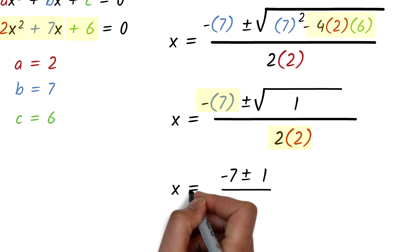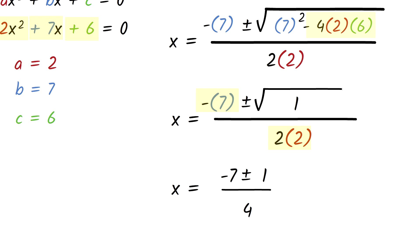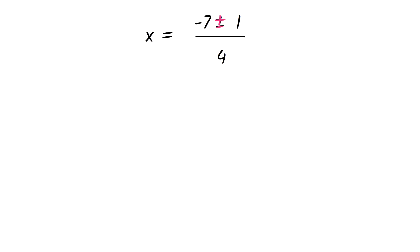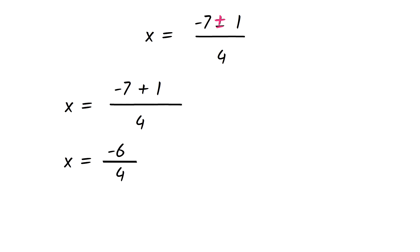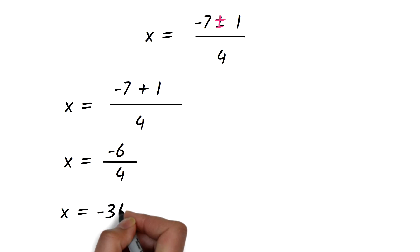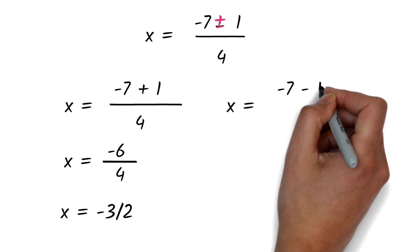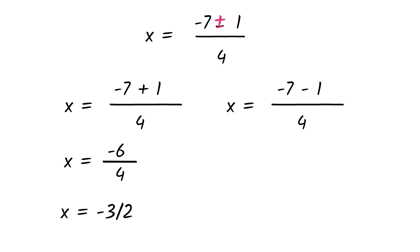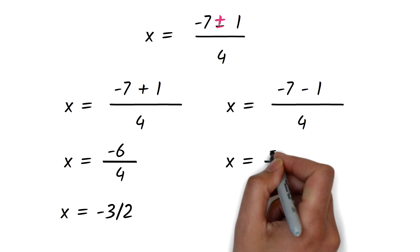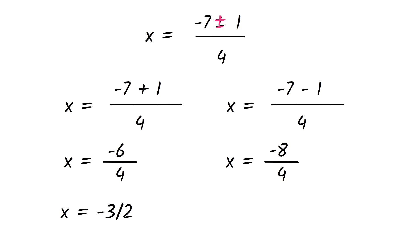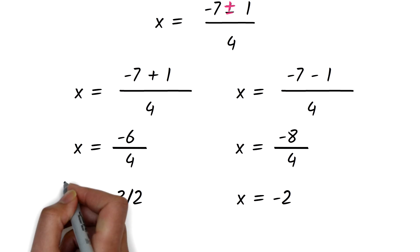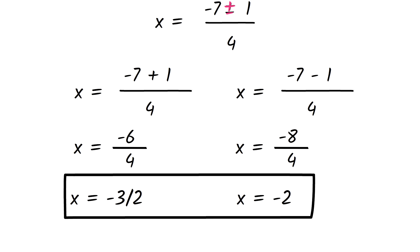So we now have x equals negative 7 plus or minus 1, all over 4. We have plus or minus, so we solve the plus part first. x equals negative 7 plus 1 over 4. Negative 7 plus 1 is negative 6, so this is negative 6 divided by 4. We can reduce this to get x equals negative 3 over 2. Next, we solve the minus part. x equals negative 7 minus 1 over 4. Negative 7 minus 1 is negative 8, so this is negative 8 divided by 4, giving us x equals negative 2. Our answer is x equals negative 3 over 2 or x equals negative 2.